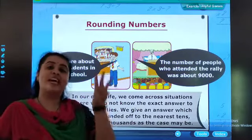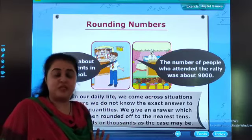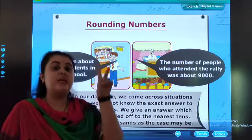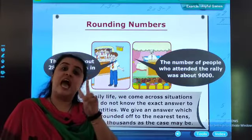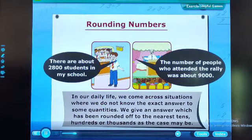In this, there are three types of rounding off we will be learning in this chapter. That is, nearest to tens, nearest to hundreds, and nearest to thousands, as the case may be.